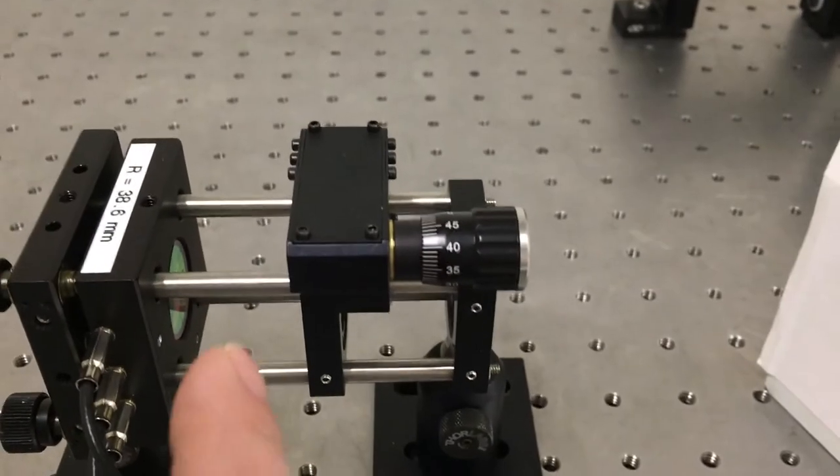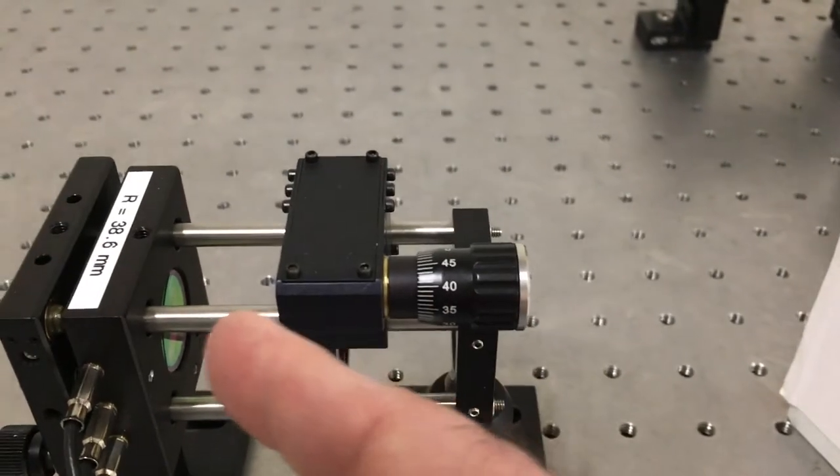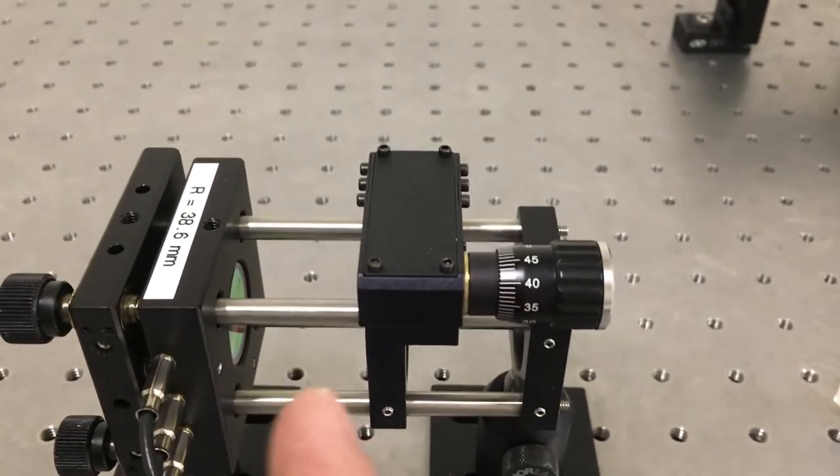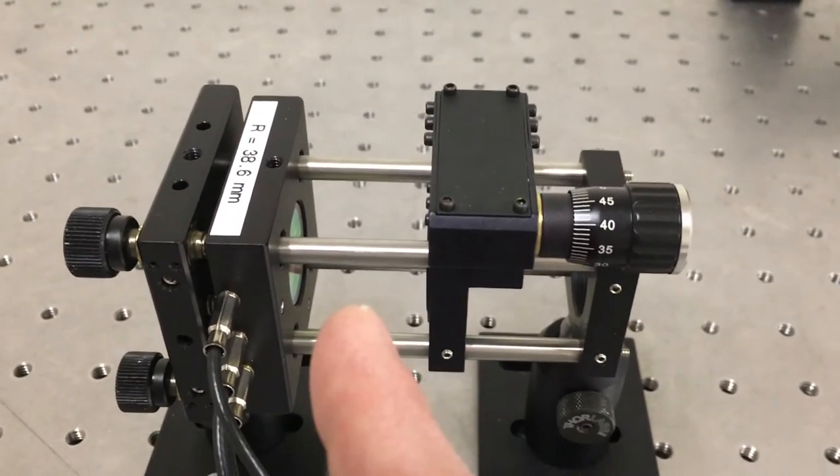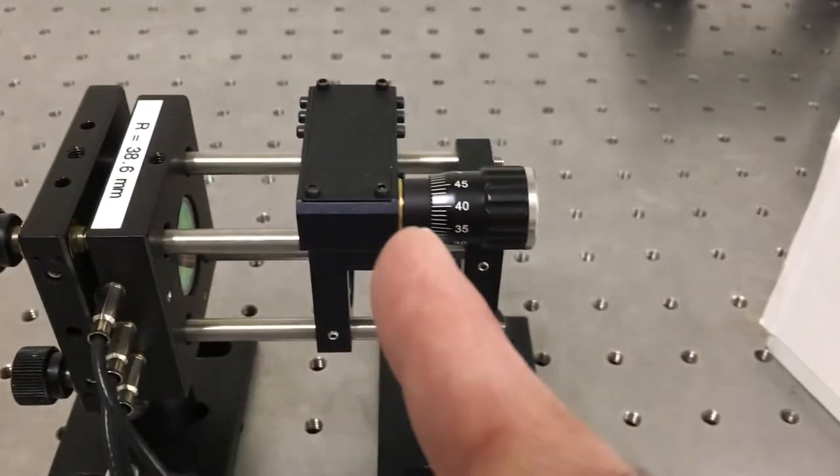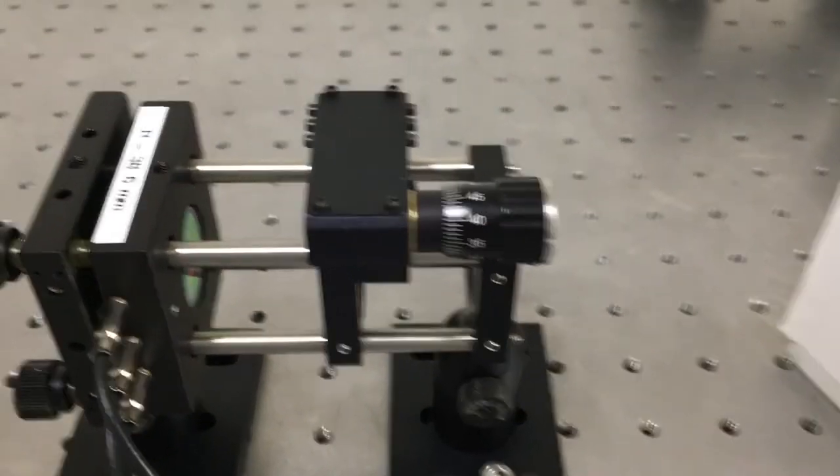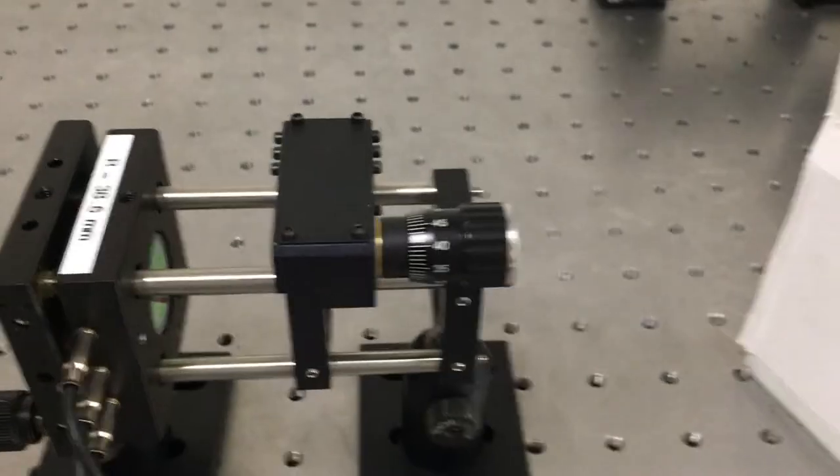The other mirror over here has a mechanical adjustment so we can precisely position it to achieve this confocal condition where the focus of the two mirrors is right at the center of the cavity. Getting the focus is critical for maximizing the output of the Fabry-Perot.